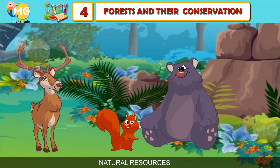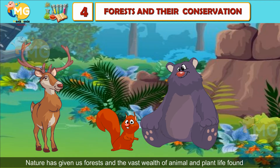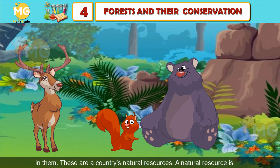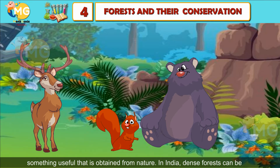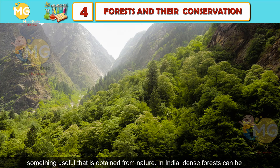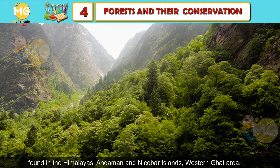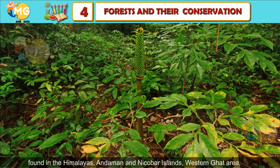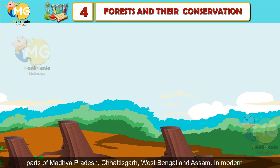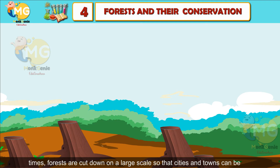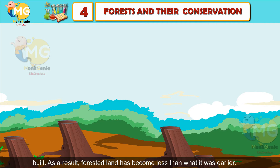Nature has given us forests and the vast wealth of animal and plant life found in them — these are countries' natural resources. A natural resource is something useful that is obtained from nature. In India, dense forests can be found in the Himalayas, Andaman and Nicobar Islands, Western Ghats, parts of Madhya Pradesh, Chhattisgarh, West Bengal, and Assam. In modern times, forests are cut down on a large scale so that cities and towns can be built, and as a result forested lands have become less than what they were earlier.